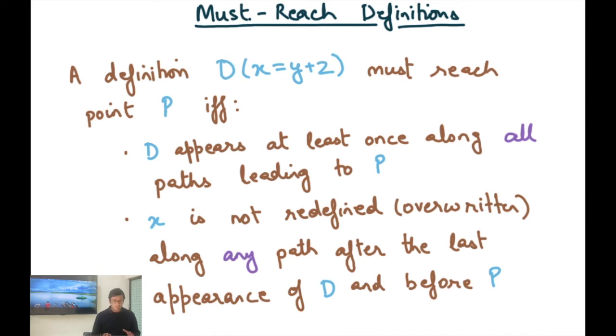Okay, so basically on all possible paths D is reaching P and on none of those paths is there another statement that is killing D. So the last definition of x is because of D on all paths that are reaching P. So that's what must-reach definitions says.